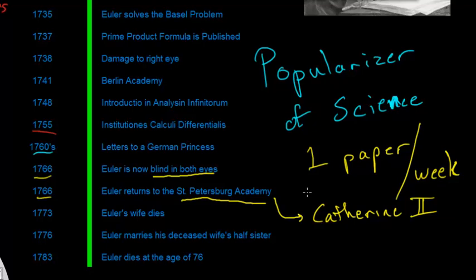And unfortunately, his return to Russia is kind of full of tragedy. Like I said, he becomes blind in both eyes. And in, I believe, the early 70s, his house burns down, and he almost dies in the fire. And then in 1773,